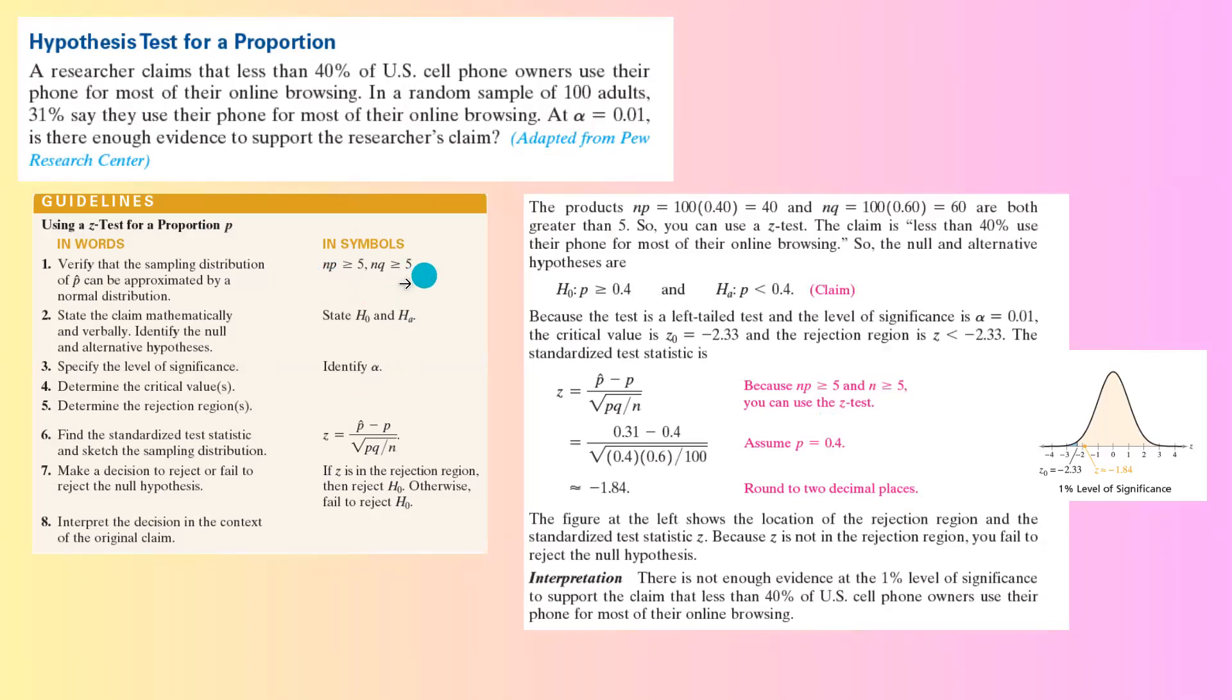For the rejection region, first you need to check to see if NP is more than or equals to 5 and NQ is more than or equals to 5. Since N is 100, you have 100 adults in this survey, and the probability of success for the population is assumed to be 40%, we're going to multiply these two. 100 times 40% is 40, so we're good with the first one.